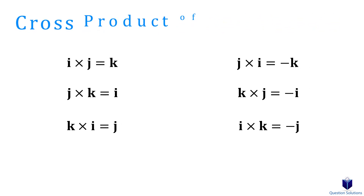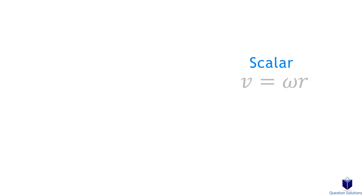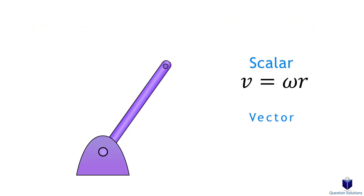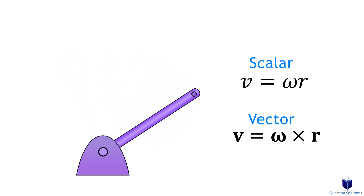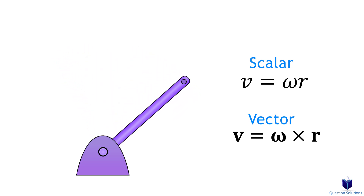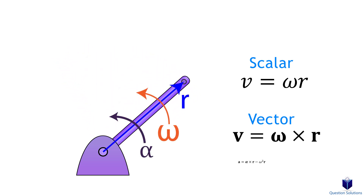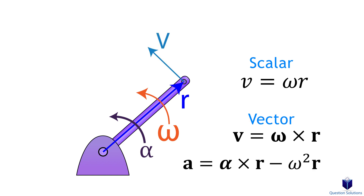A quick recap: to find velocity when something is going through rotation about a fixed axis, we use this equation, and for acceleration we use this equation. If these aren't familiar to you, please see the video on rotation about a fixed axis, since we need those to complete the problems in this chapter.